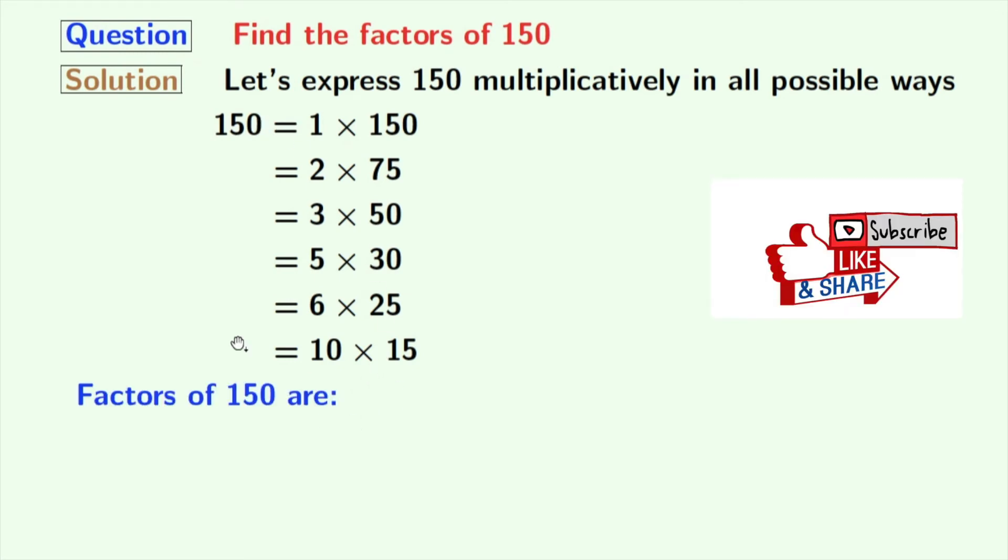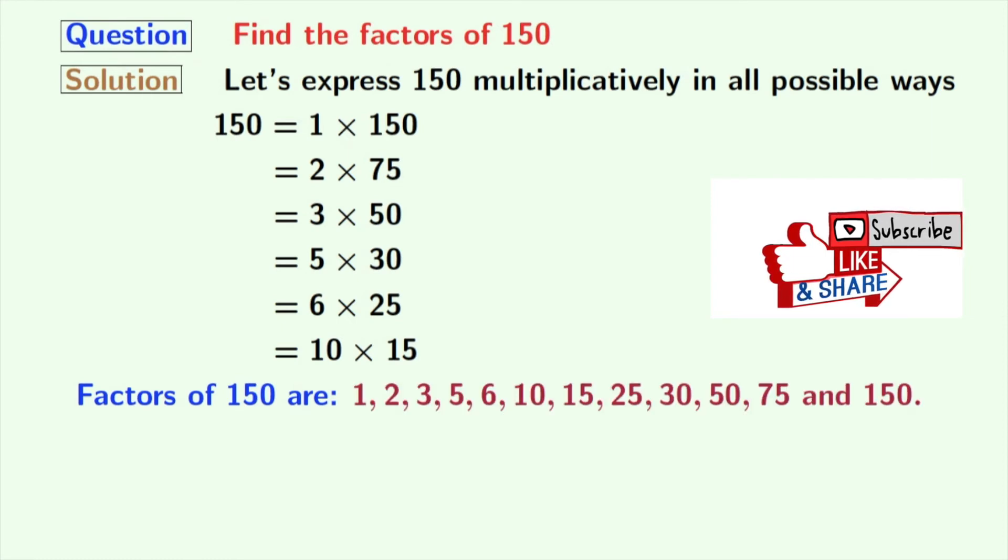Now, we have all the factors of 150 which are 1, 2, 3, 5, 6, 10, 15, 25, 30, 50, 75 and 150.